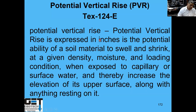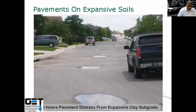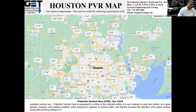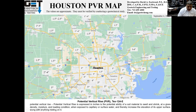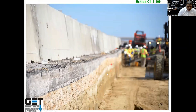Engineering analysis: one of the key items we looked at was PVR — potential vertical rise. PVR expresses the potential ability of a soil material to shrink and swell at a given density and moisture content. Looking at the Houston area PVR map, parts of Houston, Conroe, parts of Montgomery County, Baytown, and Friendswood can see five or six inches of movement. In this area, seven feet active zone used in design is not enough — you need 15 feet in this part of town.